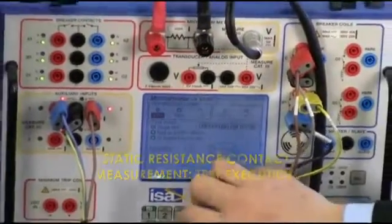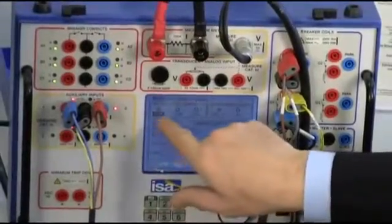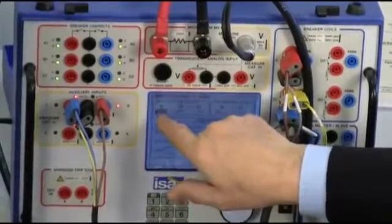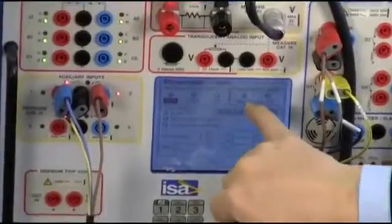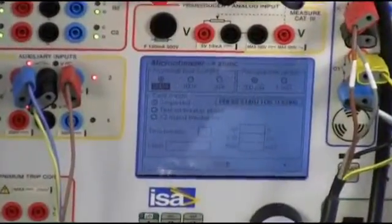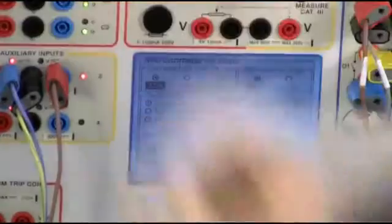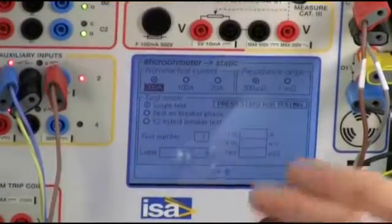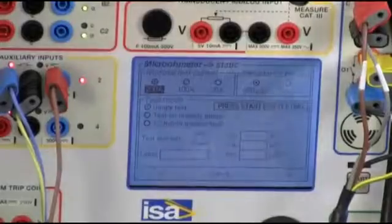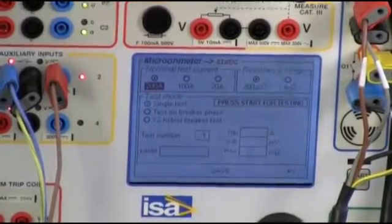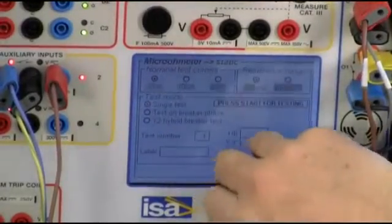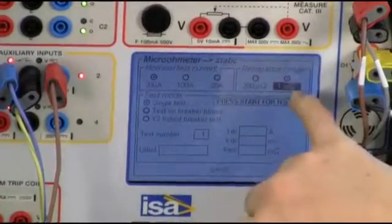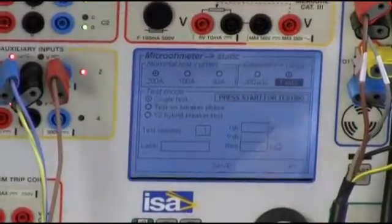For instance, the first setting that you have here is the current for the test and the resistance range. Now, I know by the manufacturer that the resistance, the nominal resistance value is in the range of half a milliohm. So I select 200 amps, but here I have to select one milliohm.